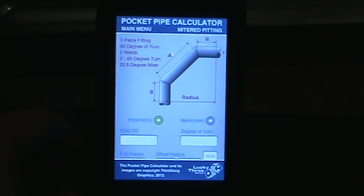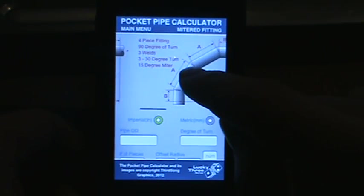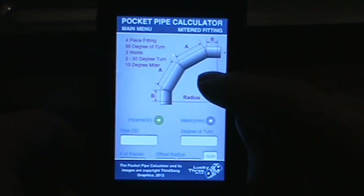As you can see here we have a sample of a three-piece fitting for a 90 degree turn. These are some standard offsets that you'll see. If you scroll the image we have another image of a four-piece fitting.